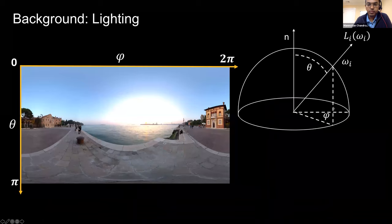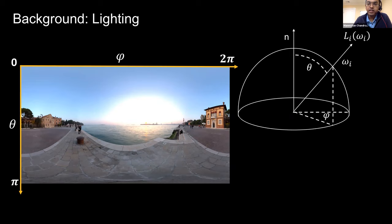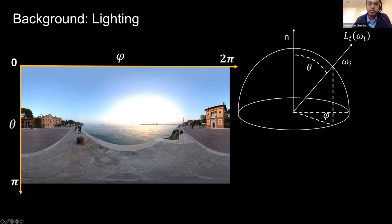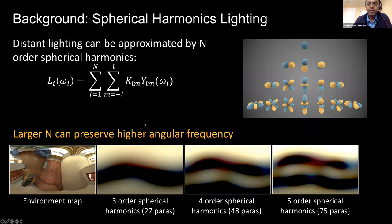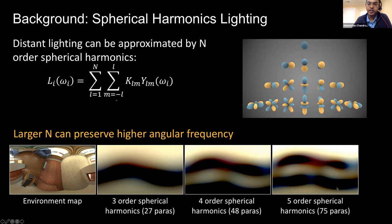We also wish to represent the lighting. In general, lighting can be thought of as the radiance arriving at a point from all other points in the scene. For distant lighting, this can be considered as an environment map defined on the visible hemisphere. It is natural to represent lighting more compactly using a spherical harmonics basis decomposition — the greater the order, the higher the frequency of lighting that can be represented.